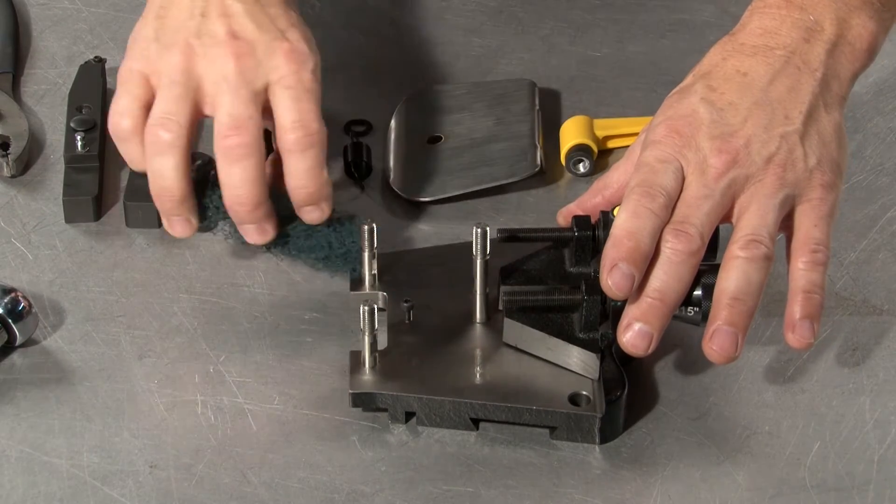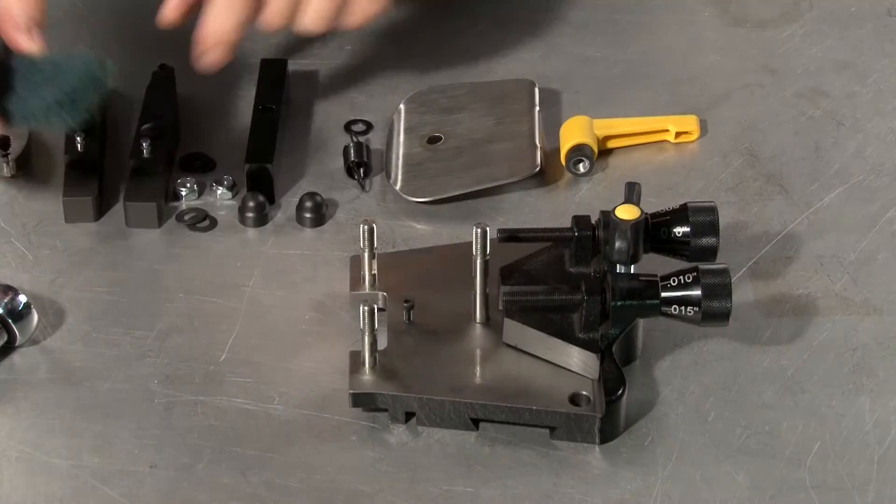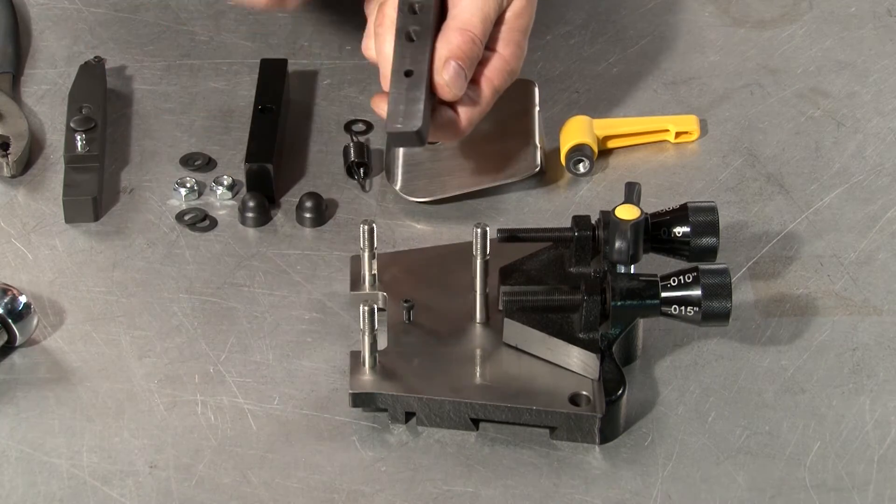Once the arms are removed, clean any debris from the tool holder plate and the underside of the tool arms with a mild abrasive like Scotch-Brite.